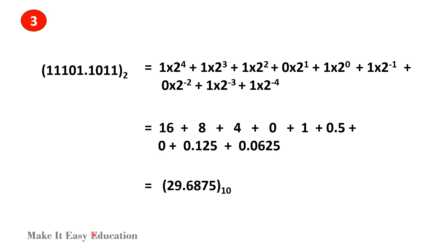Problem 3. Now let's convert this binary number to a decimal number. First, let's assign positions to all the bits. The positions before the binary point are 0, 1, 2, 3, and 4. After the binary point, the positions are minus 1, minus 2, minus 3, and minus 4. Now let's start solving — we can work from the left-hand side.